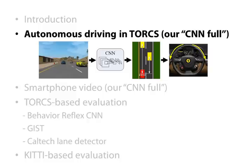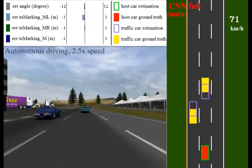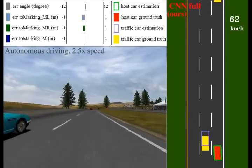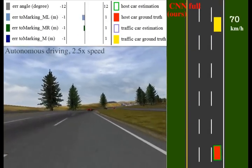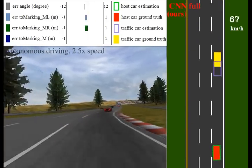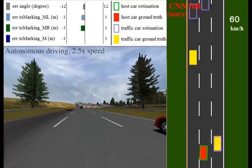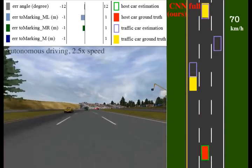We show our direct perception based system driving autonomously in a racing game, Torx. On this three lane track, the autonomous driving host car overtakes a series of traffic cars by switching lanes.